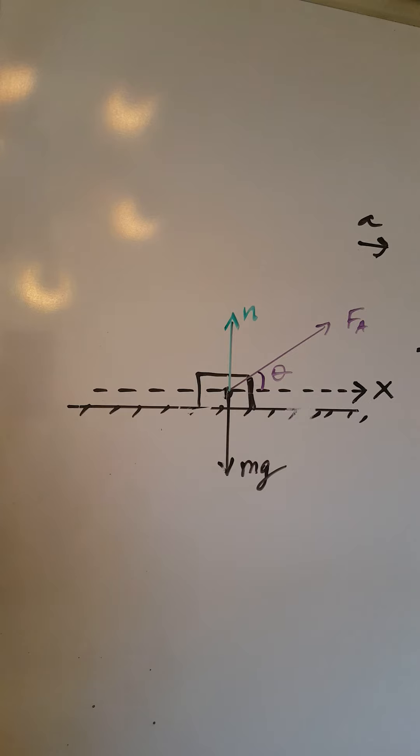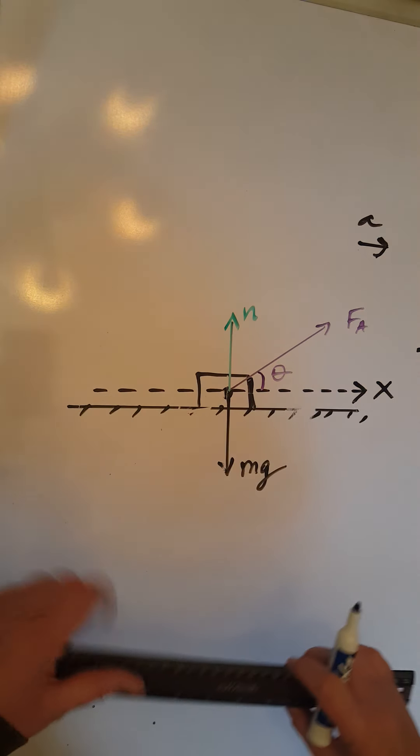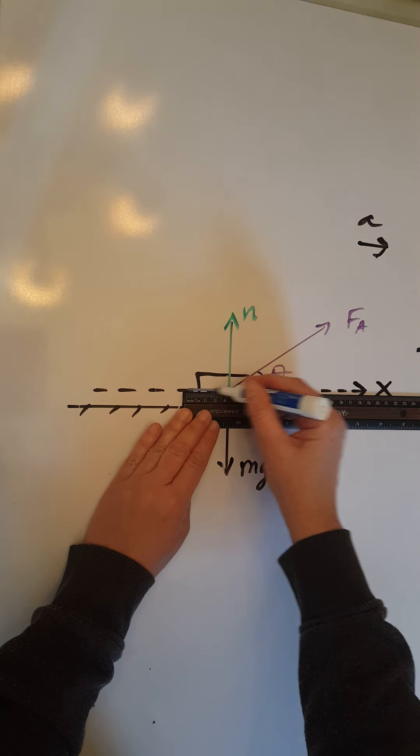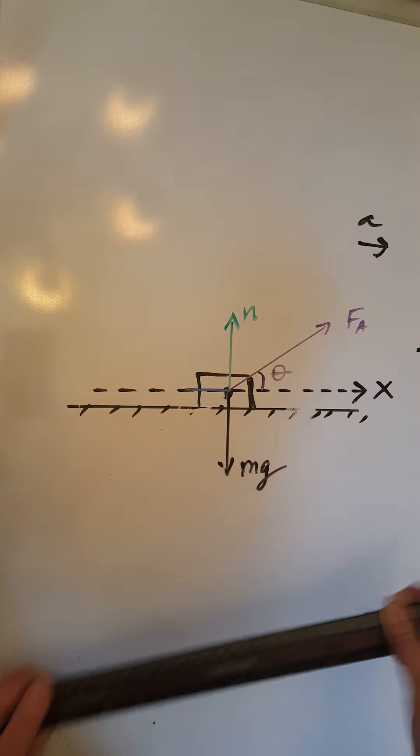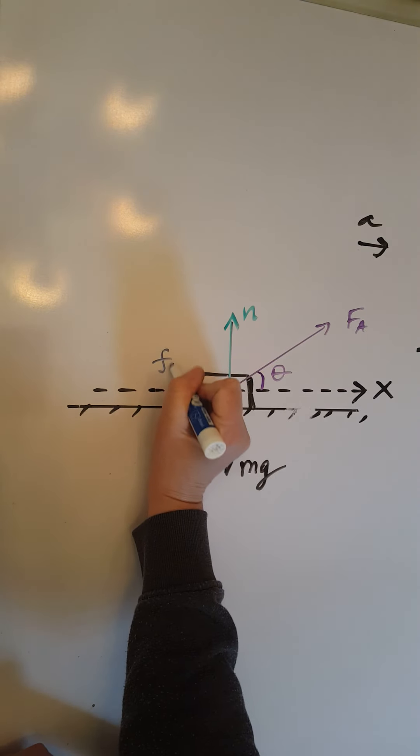And the table is also rough, so there will be friction. Friction is always parallel to the surface in the opposite direction of motion. Since the object accelerates on the table to the right, the force of friction will be parallel to the table, here in blue. To the left, we are going to put an arrow on it and label it little f with an index k.